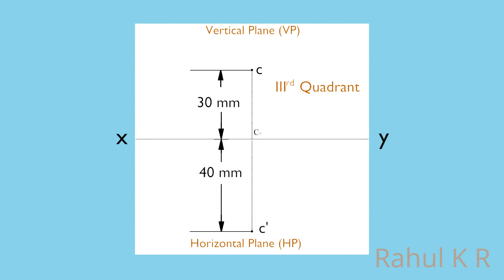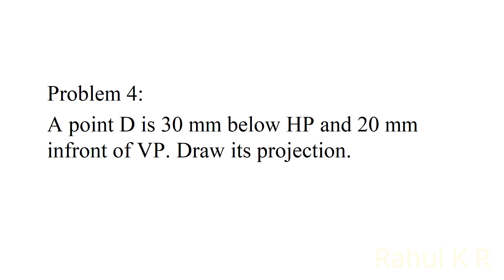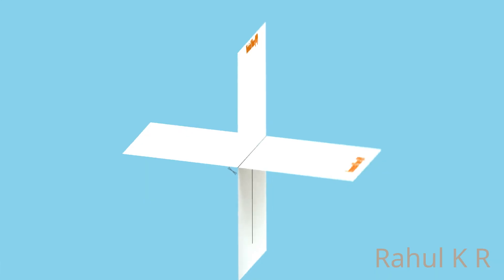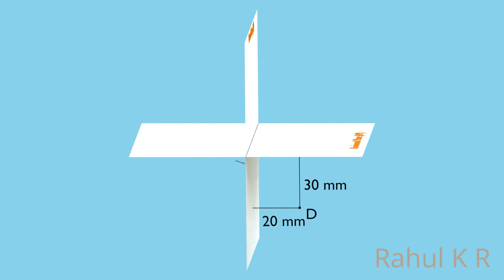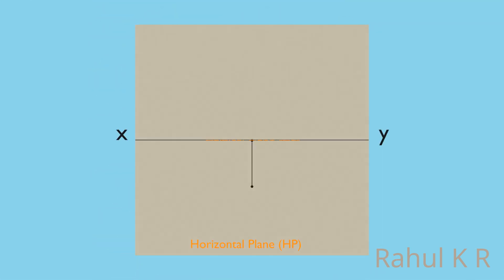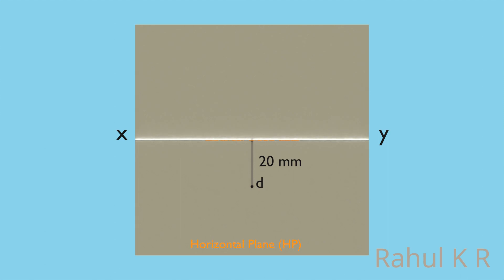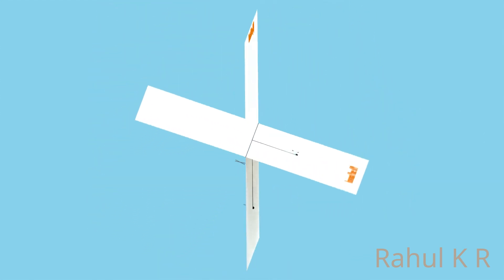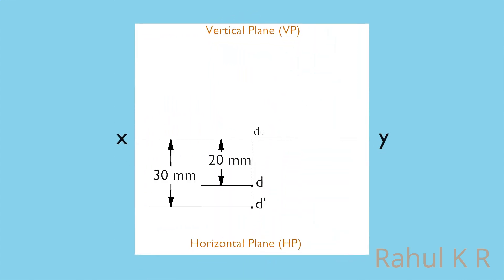Now let's solve the fourth problem. A point D is 30 millimeters below HP and 20 millimeters in front of VP. Draw its projection. Since the point D is below HP and in front of VP, it is in the fourth quadrant. Its front view obtained on the vertical plane is denoted by small letter D dash. The top view is denoted by small letter D and it is obtained on the horizontal plane. After rotating the horizontal plane 90 degrees clockwise, the projection looks like this. Note that both the front view and top view are below the XY line — just opposite to the case of a point placed in the second quadrant.